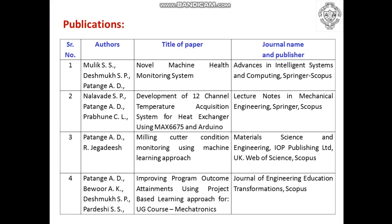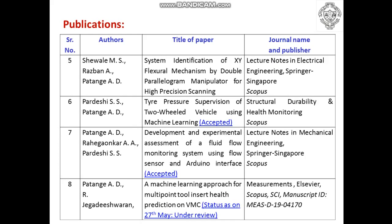The fourth publication is related to improving program outcome attainments using project-based learning implemented for the UG course Mechatronics, where projects were allotted to students in groups of 3 or 4. The project-based learning approach was compared with traditional teaching-learning, and it was found that project-based learning has really good potential compared to the traditional method, resulting in significant improvement in program outcome attainments. Published in the Journal of Engineering Education and Transformation, indexed by Scopus.